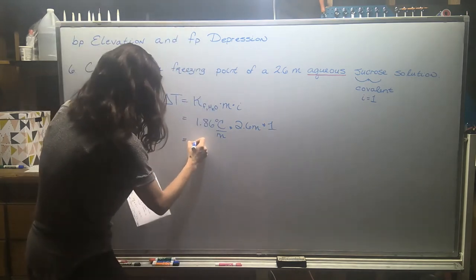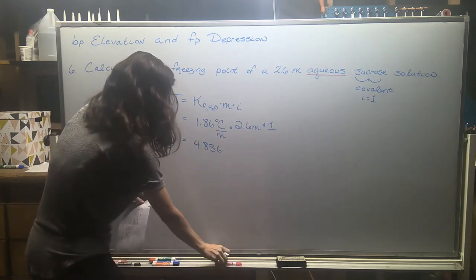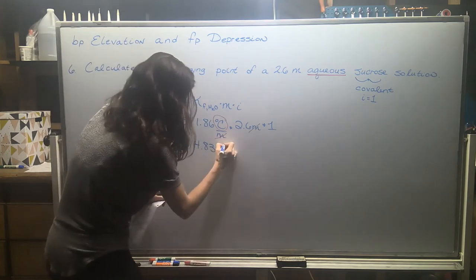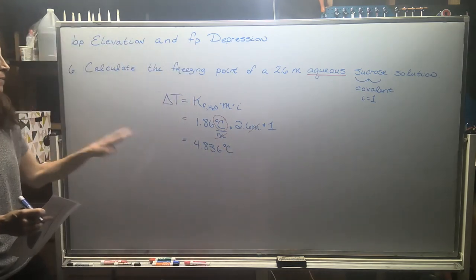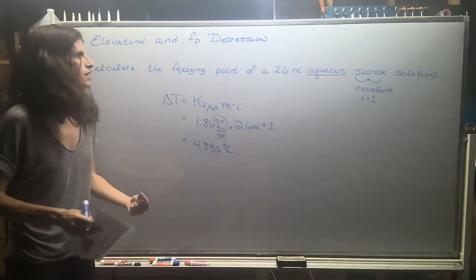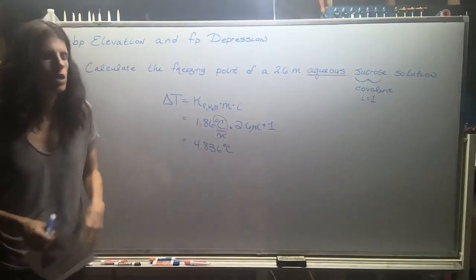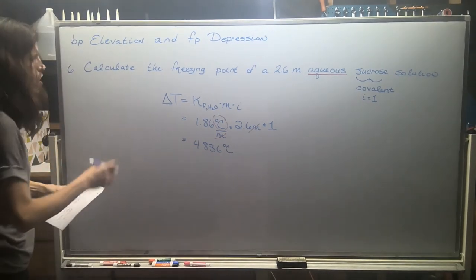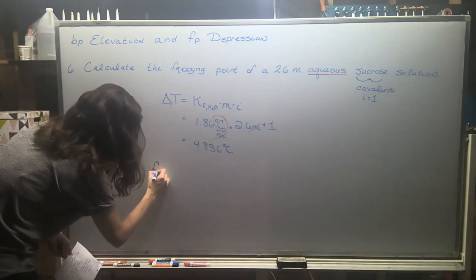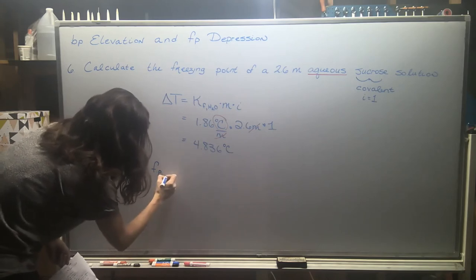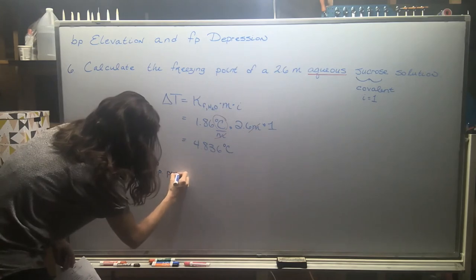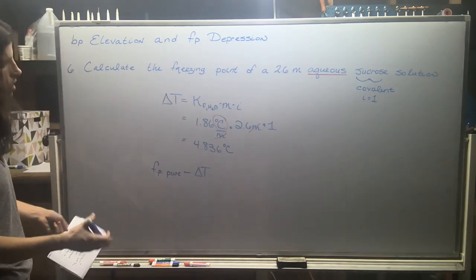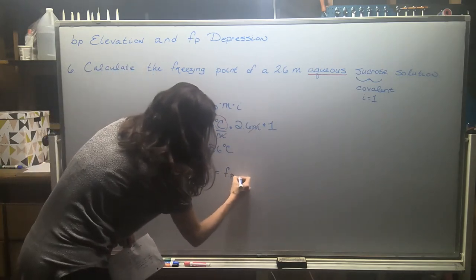When I solved this earlier, I got 4.836 and the units work out really nicely, right? The molal canceled the molal and we're just left with degrees Celsius. If you're taking a multiple choice test, typically that's one of the answers. But if we think about it, that answer doesn't make any sense. Freezing point depression, it brings the freezing point down. Water normally freezes at zero degrees Celsius. So what's up with this value? There's a second step to these problems. So we need to take the freezing point of the pure substance minus the freezing point, the delta t value, the freezing point depression. And that's going to give us the freezing point of the solution.